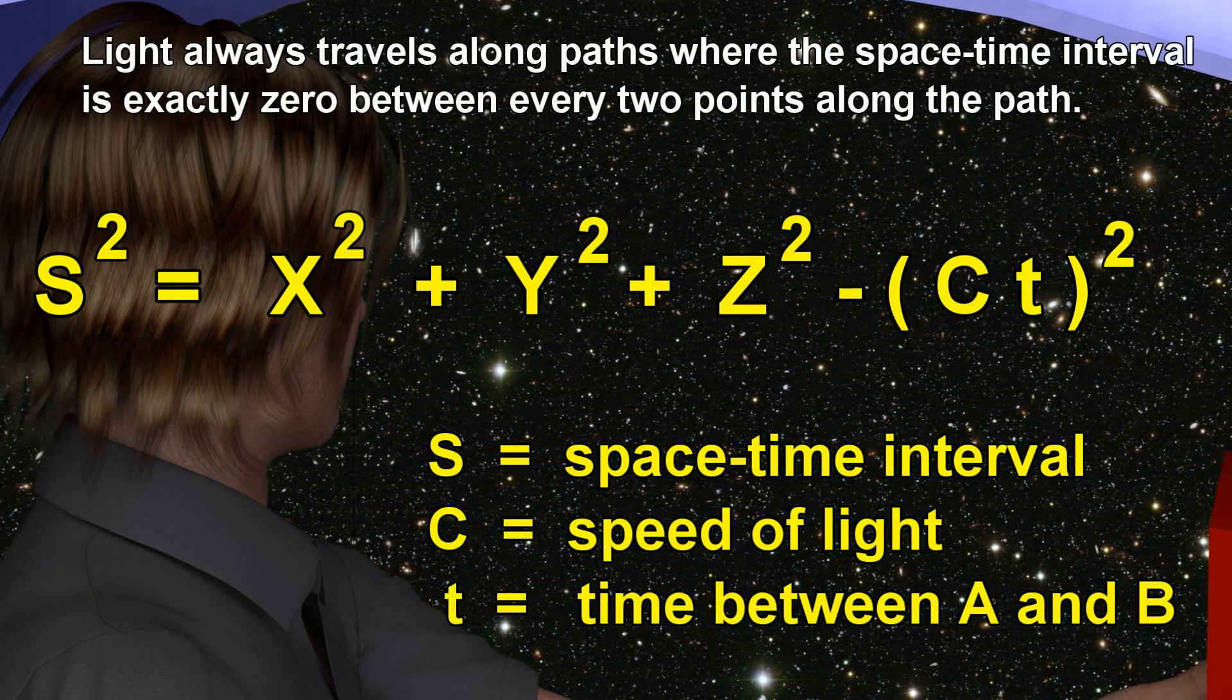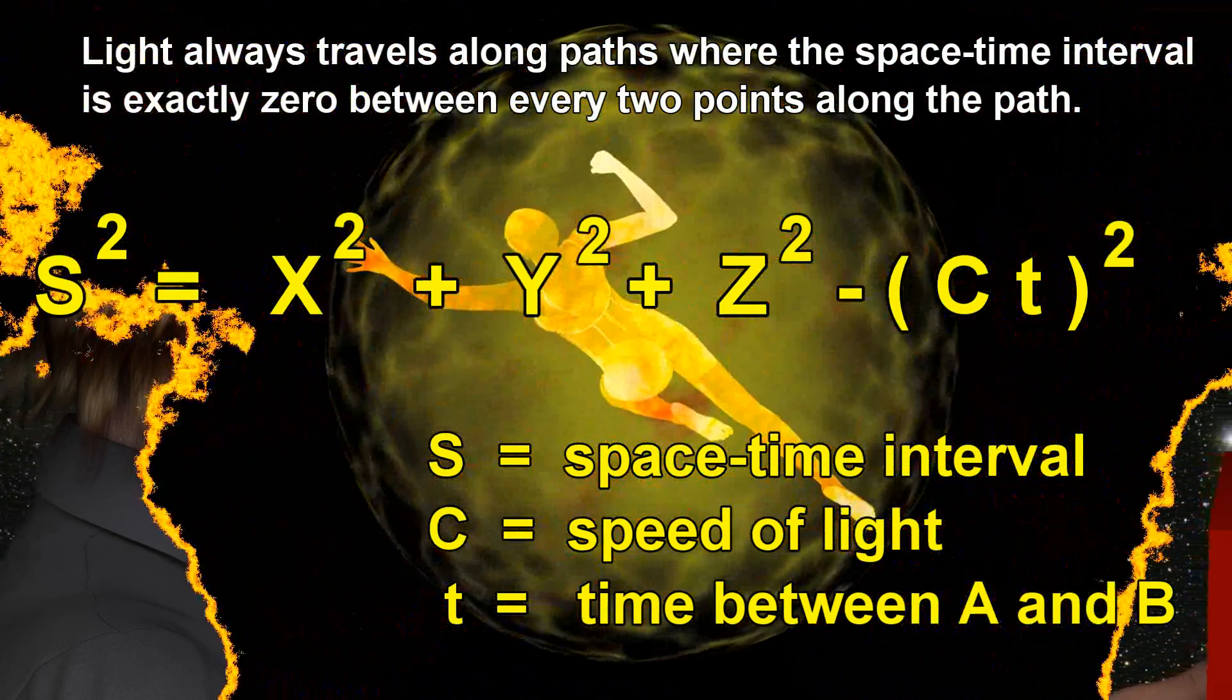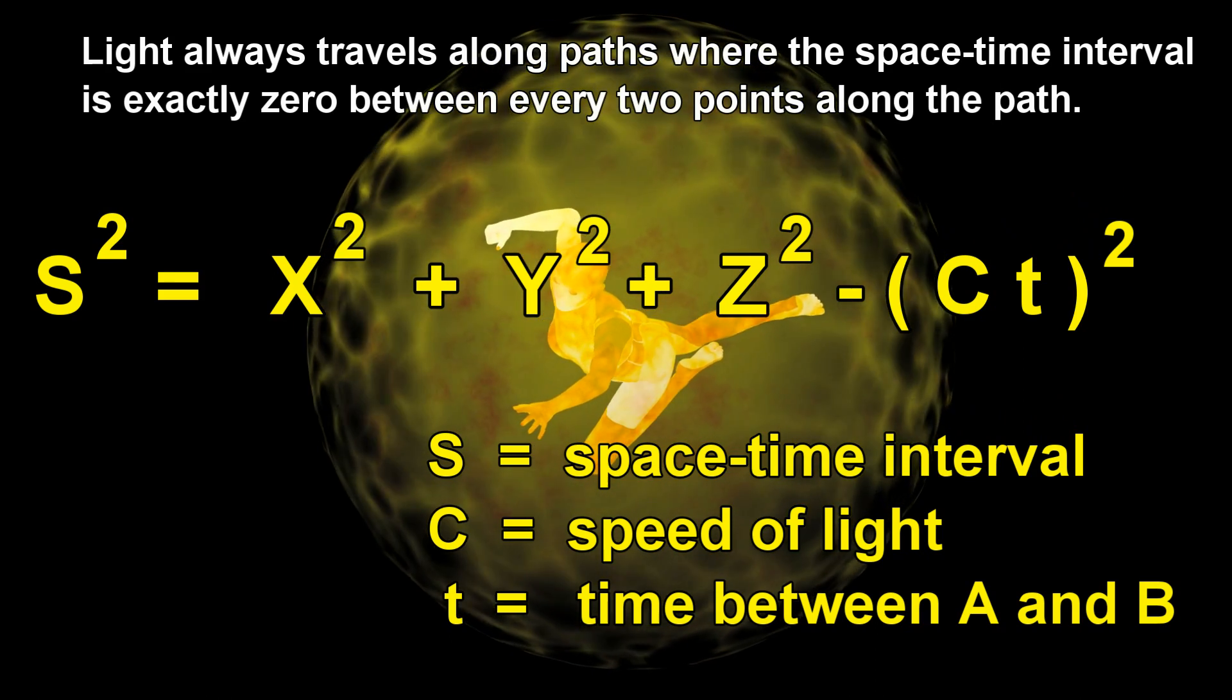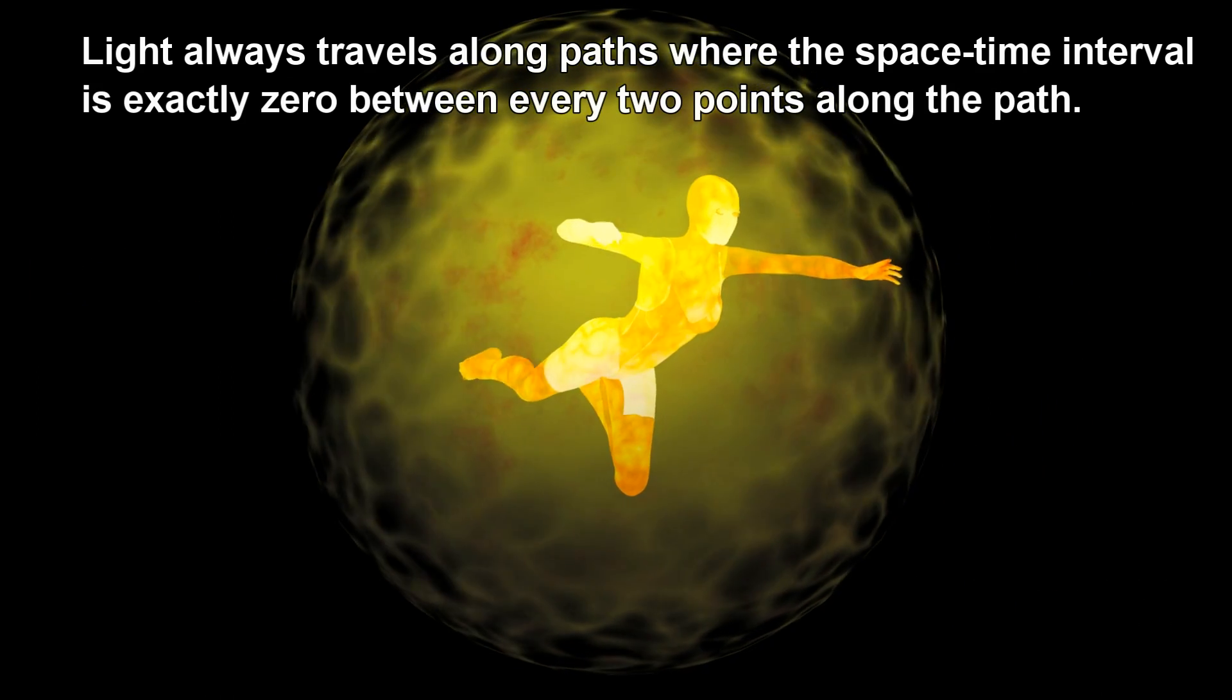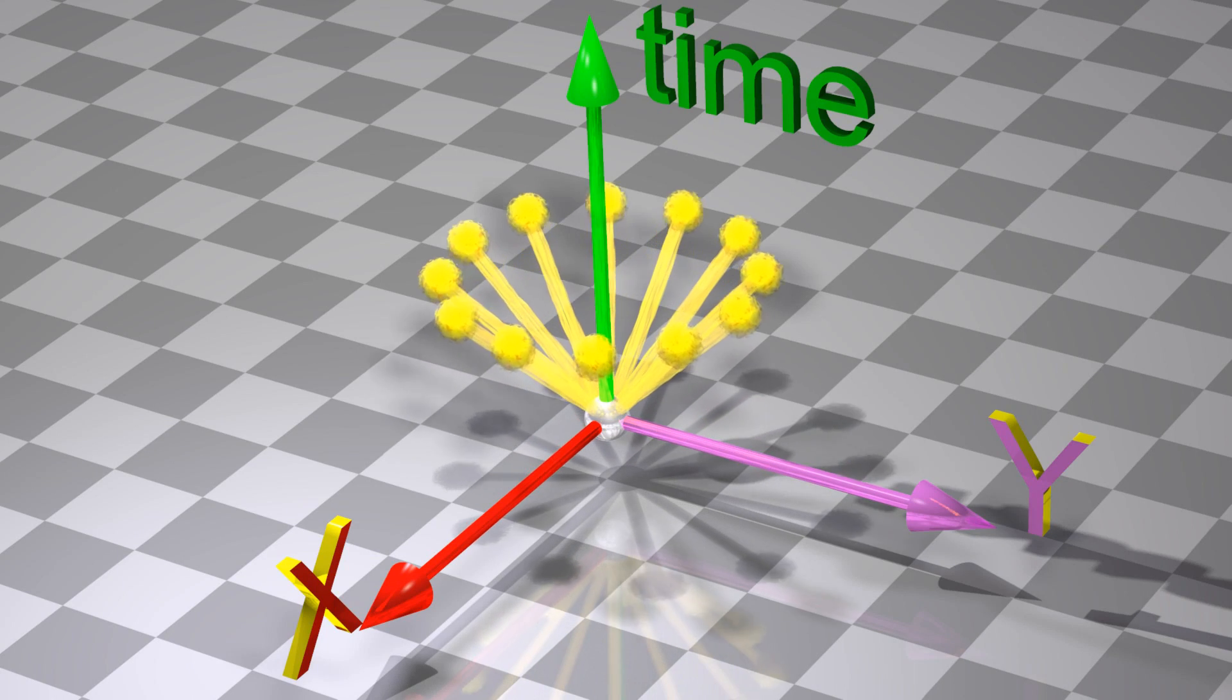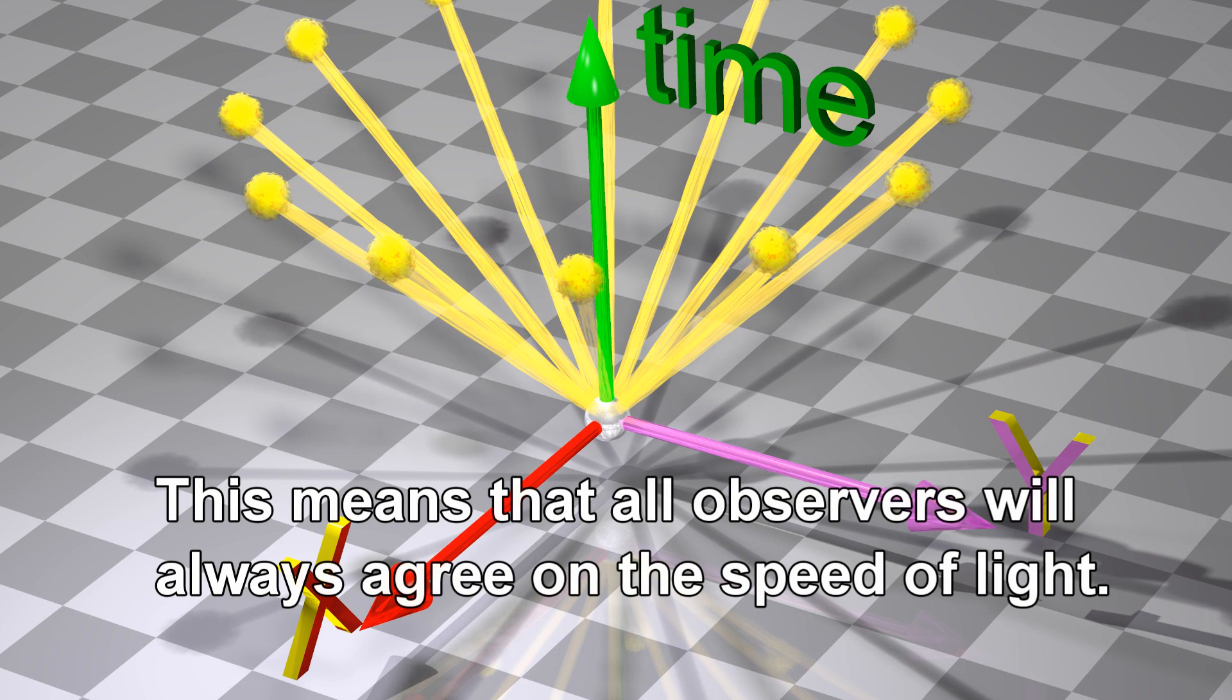Light always travels along paths where the spacetime interval is exactly zero between every two points along the path. This means that all observers will always agree on the speed of light.